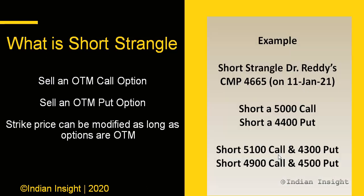So what is the short strangle option strategy? A short strangle strategy involves selling an OTM call option and selling an OTM put option. OTM means out of the money. An out-of-the-money call is when the strike price of the call is higher than the current market price. Similarly, an OTM put is a put whose strike is below the current market price.